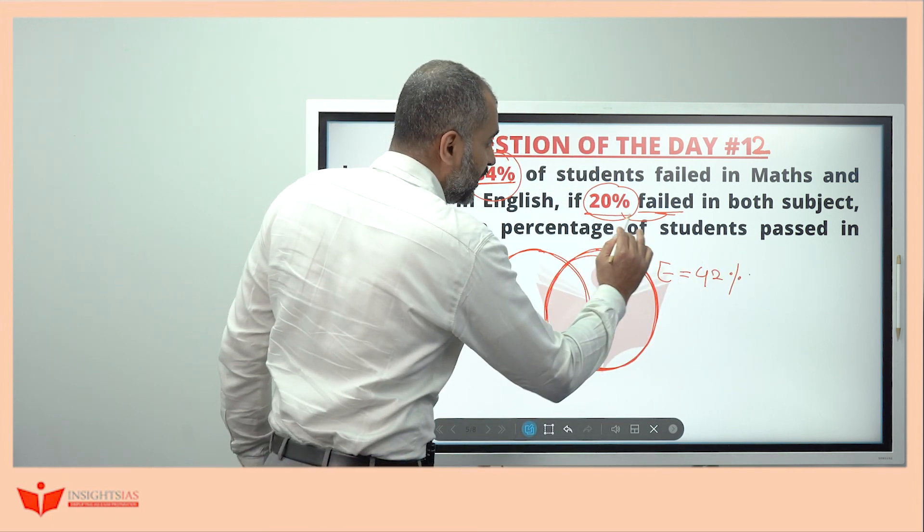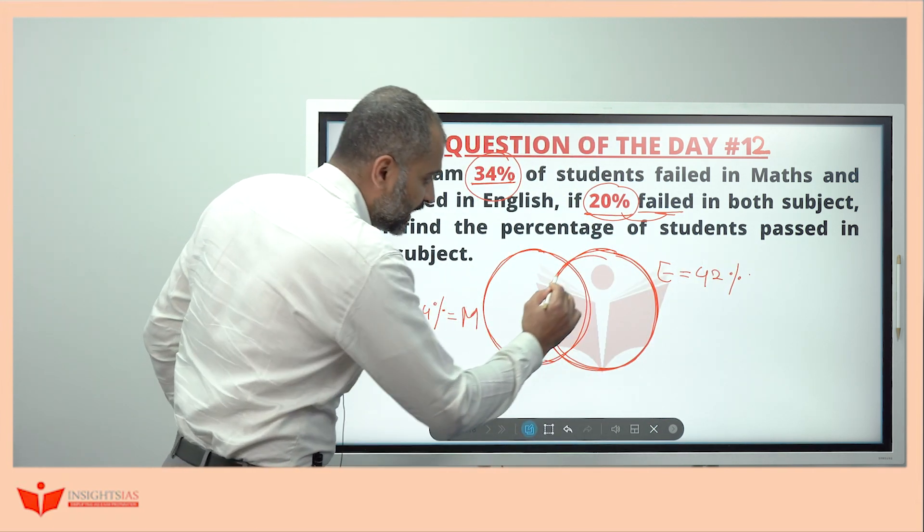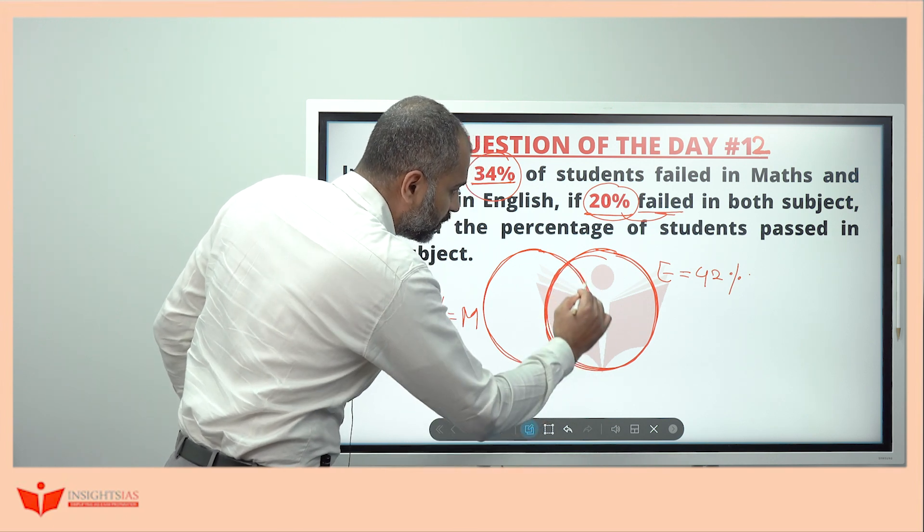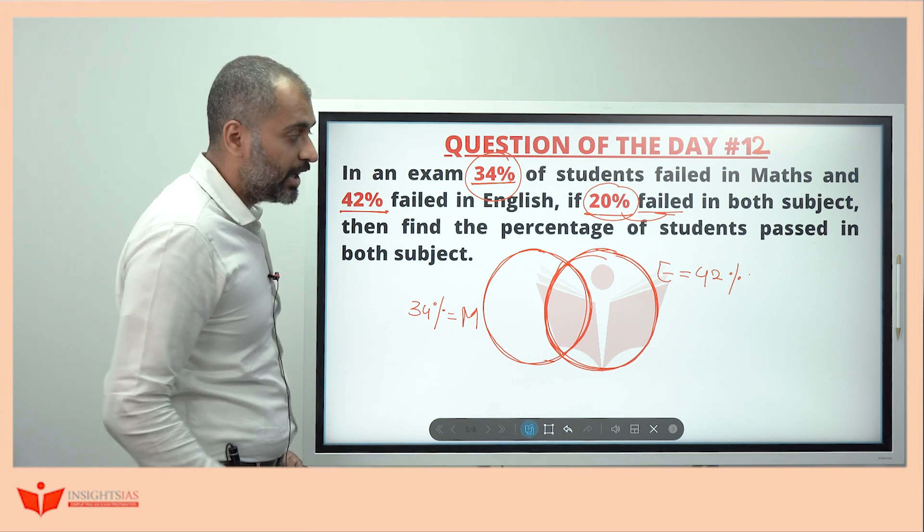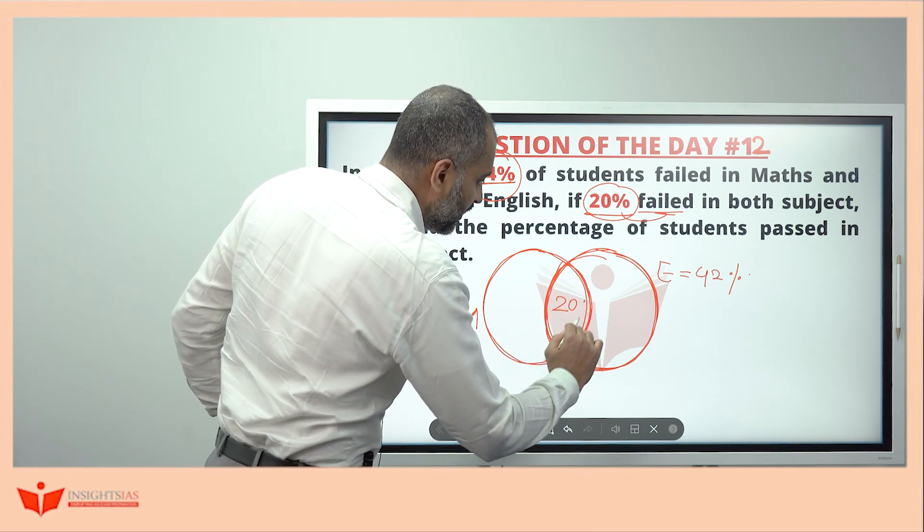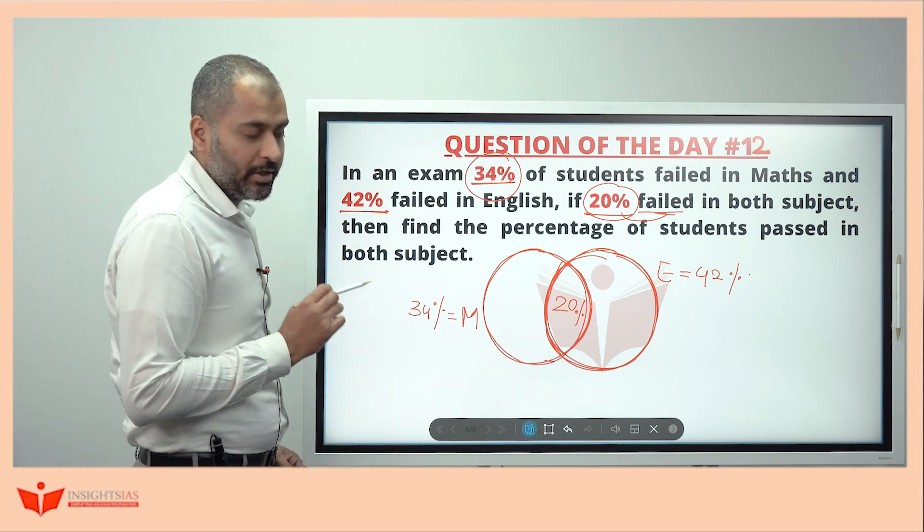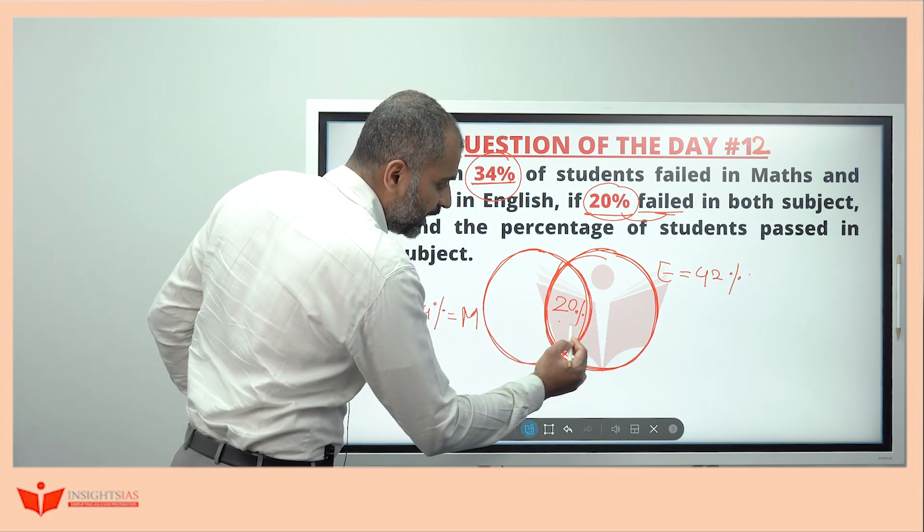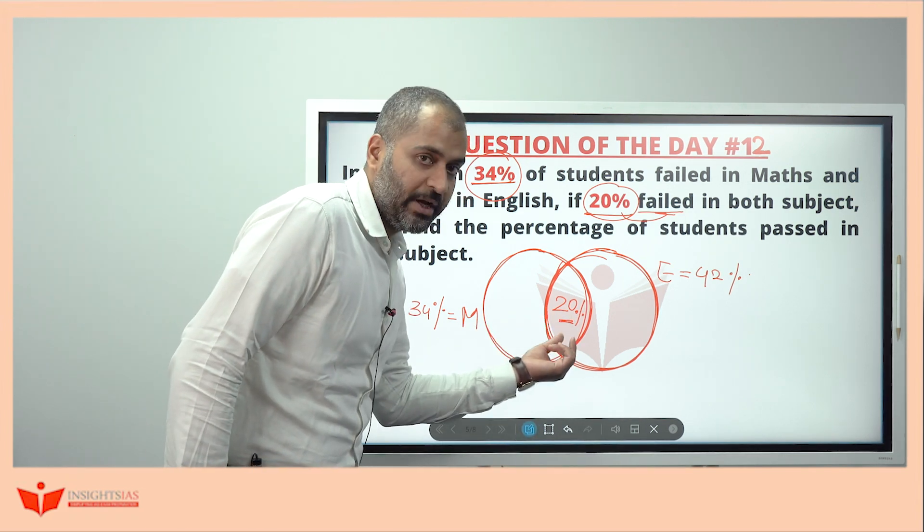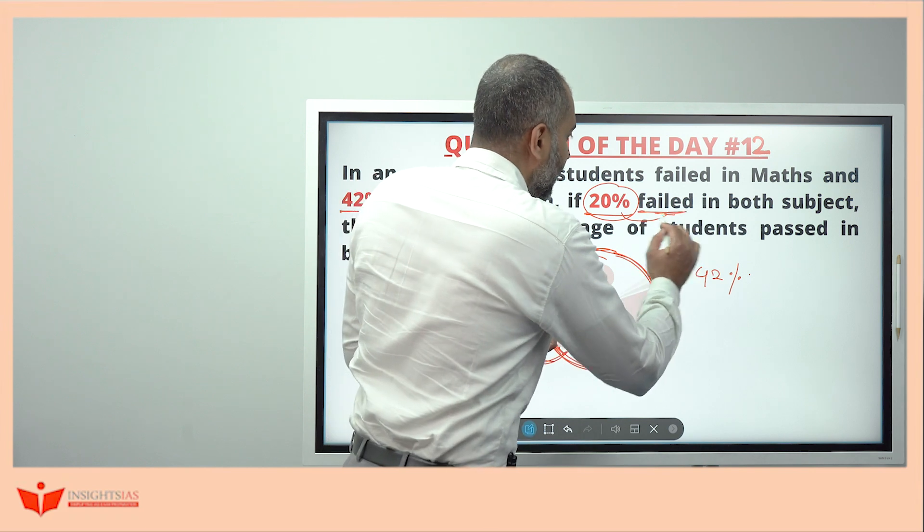And where to fill this 20%? This intersection point is common for both A and B. Then first fill this one. Start always from the maximum intersection point. In this case, this is the only intersection point. This is 20%, hence I have filled 20%.